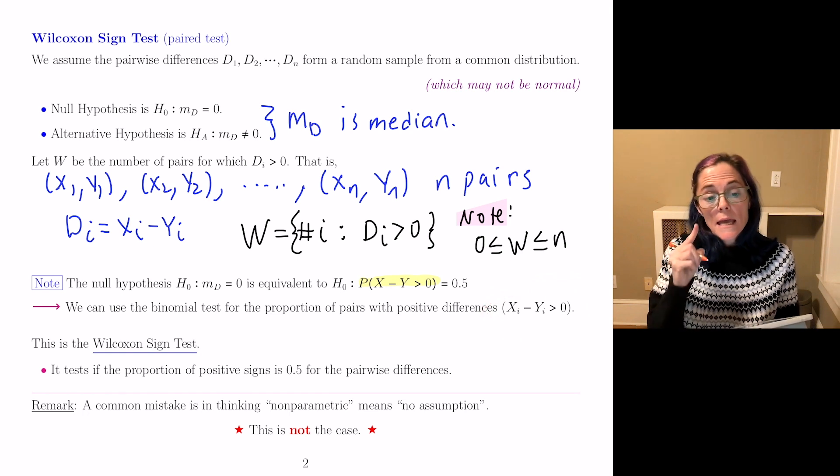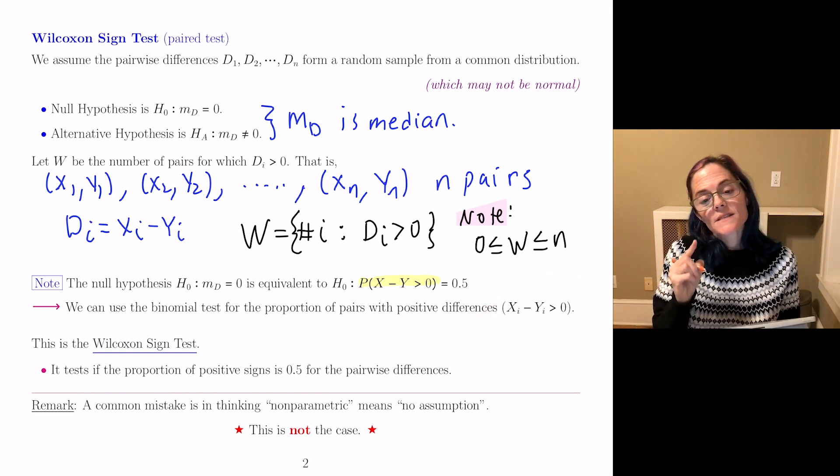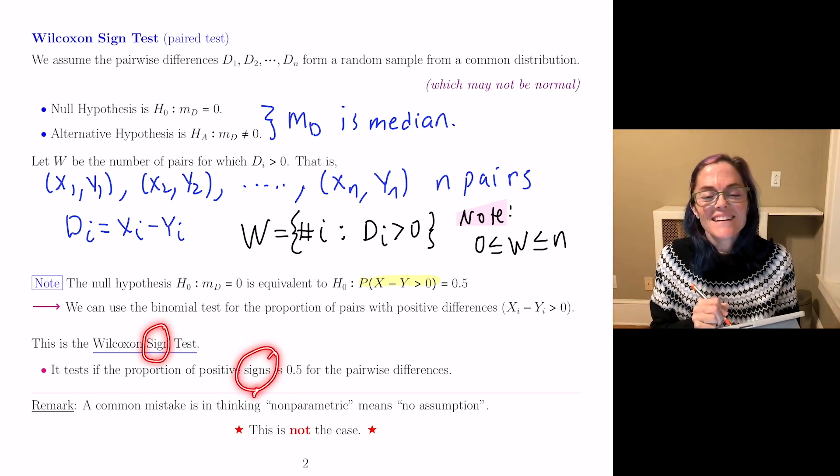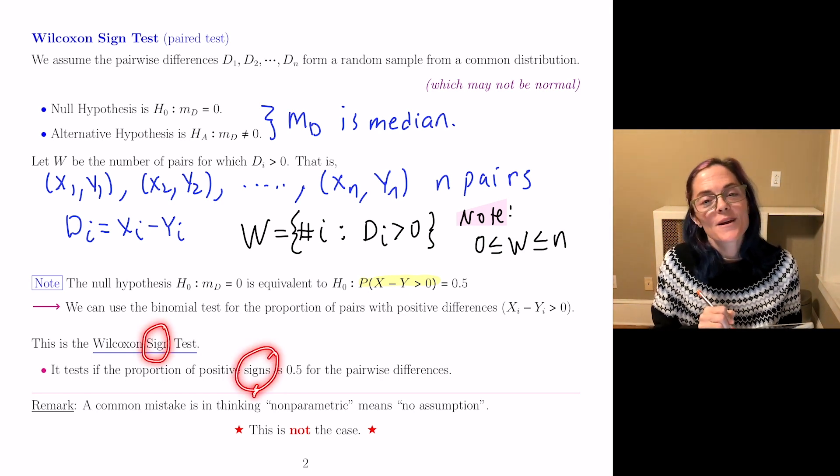This is called the Wilcoxon sign test. It tests if the proportion of positive signs is one half for pairwise differences.